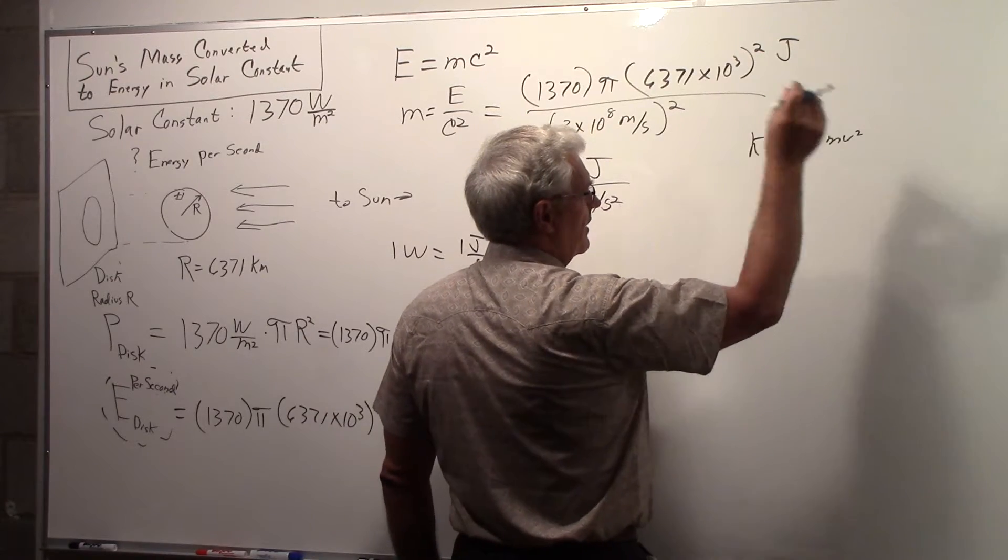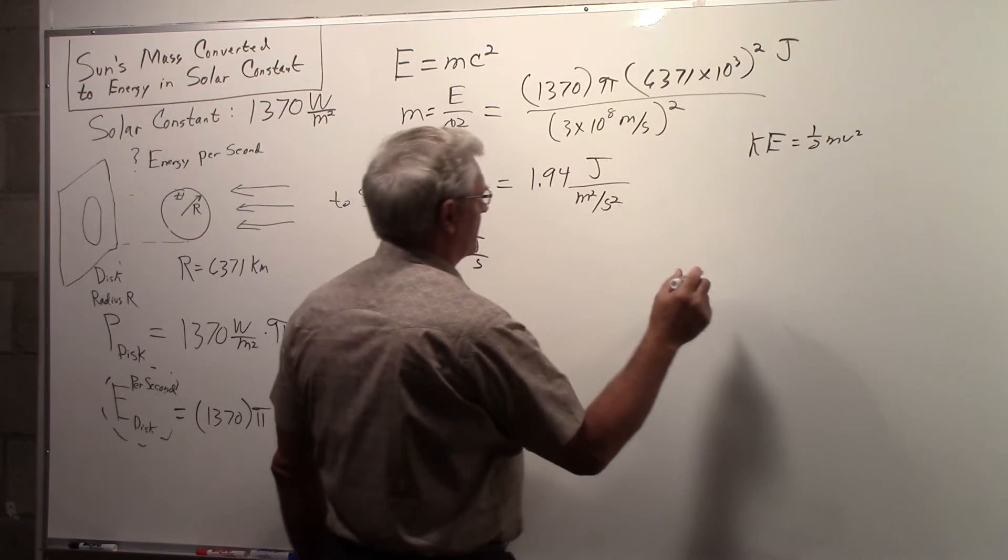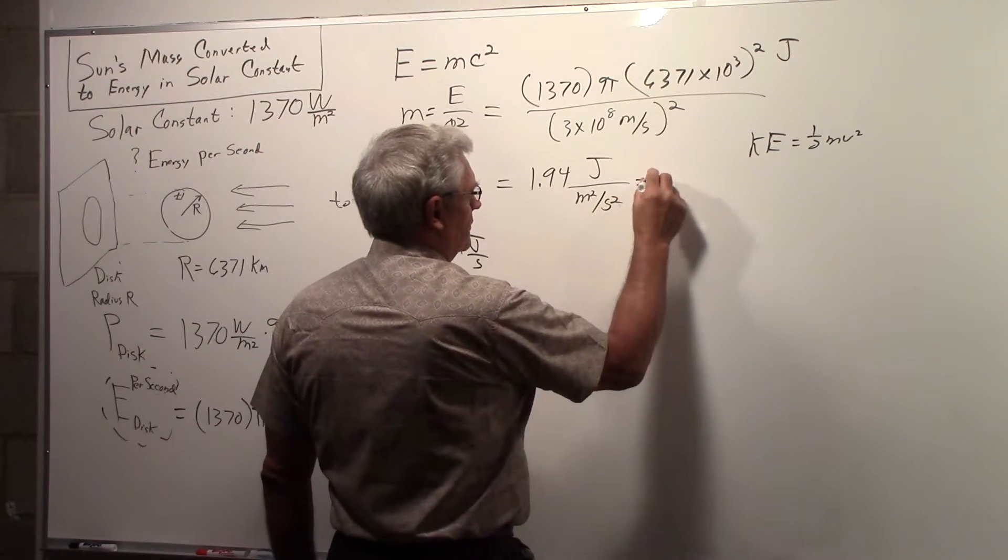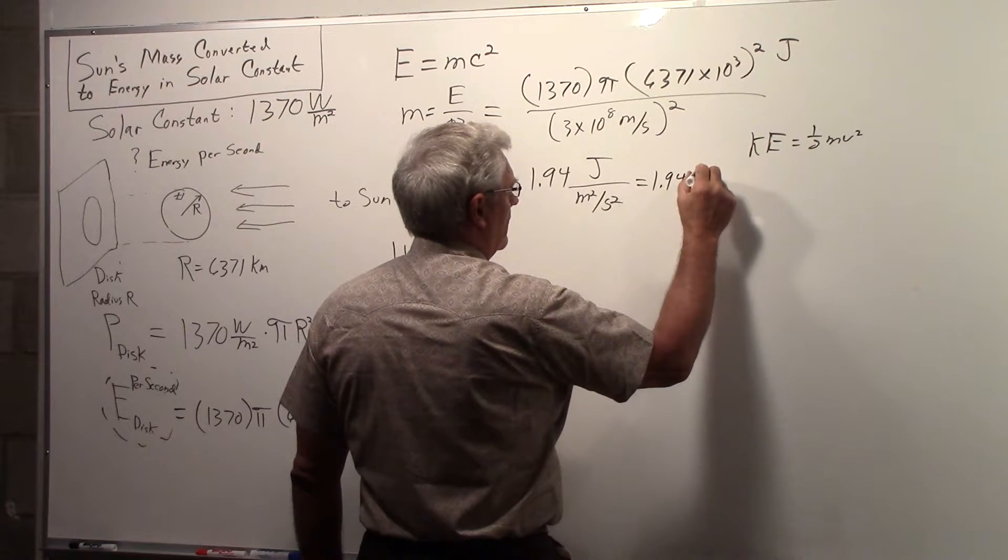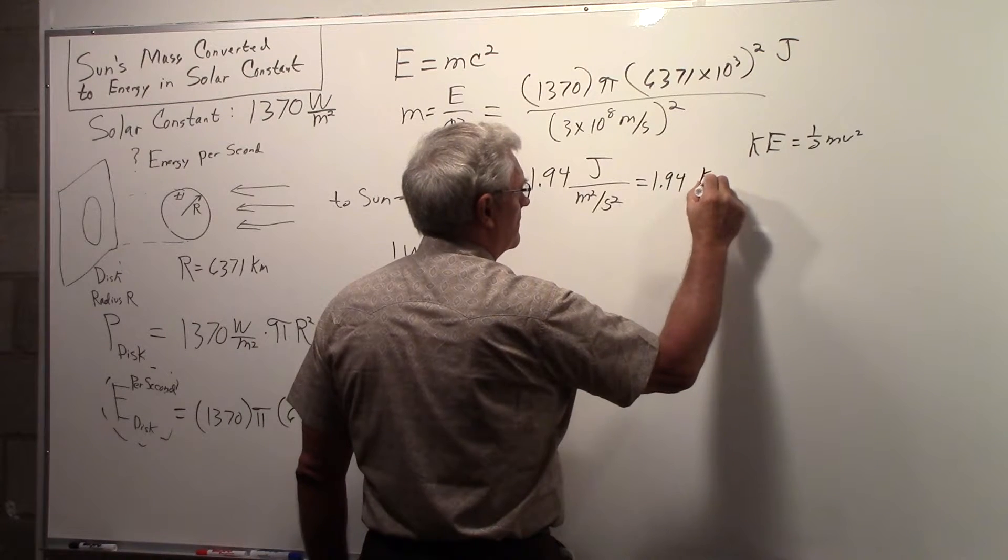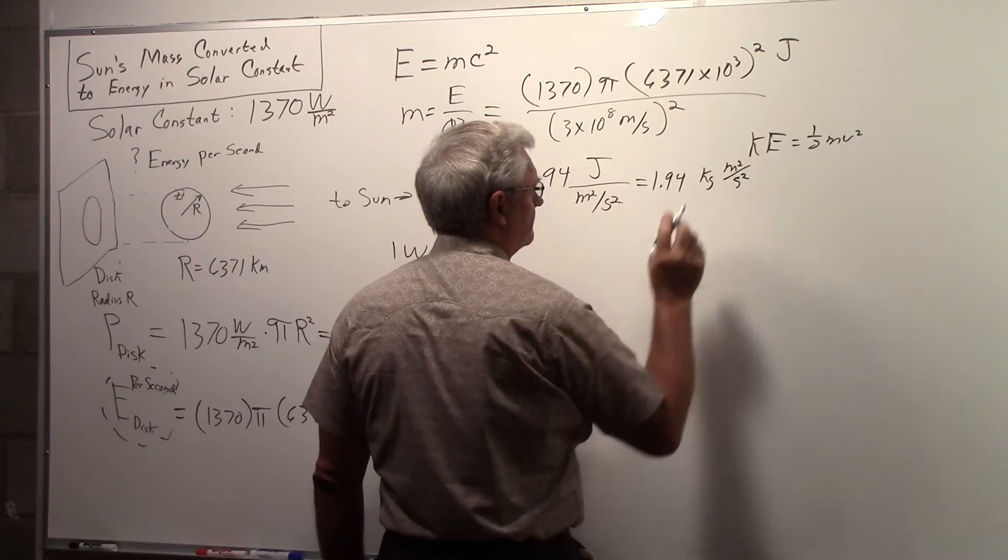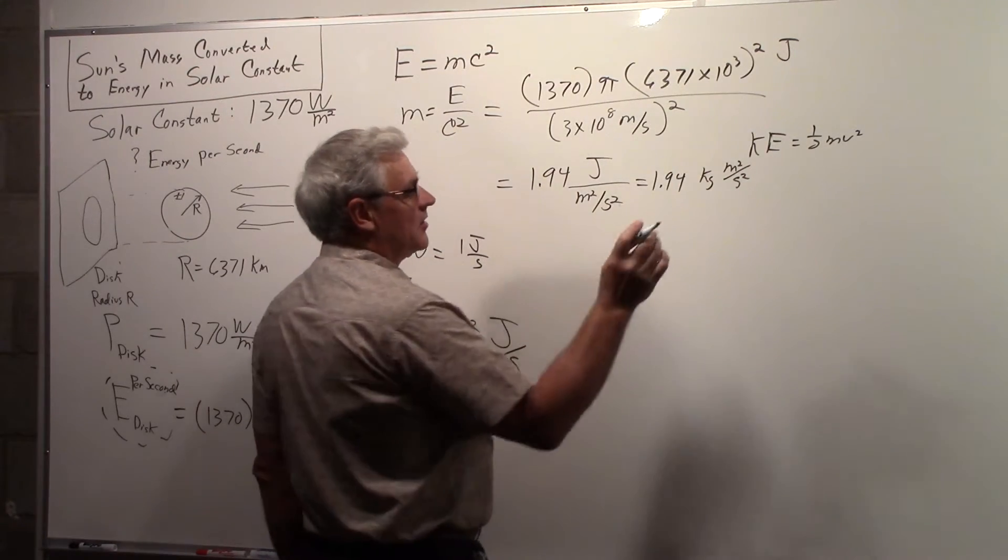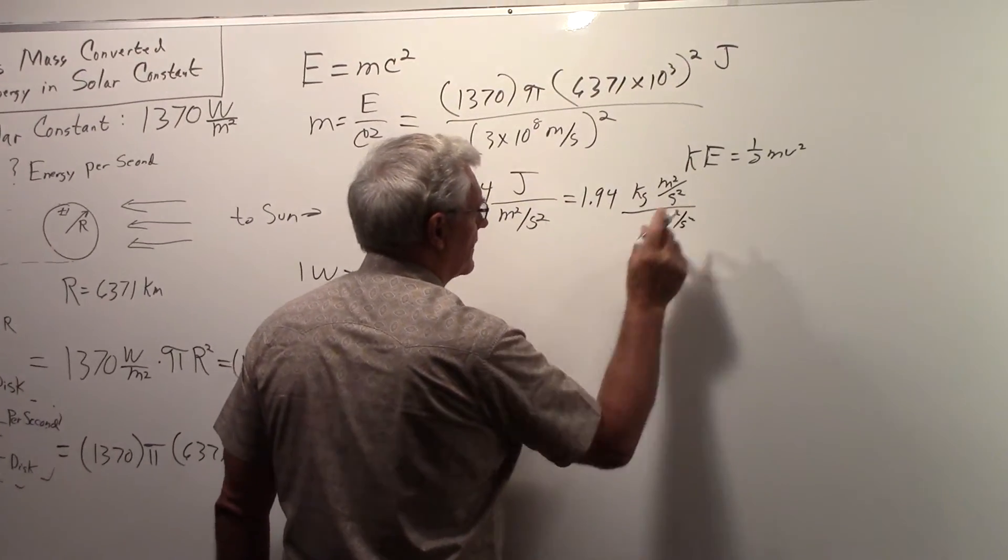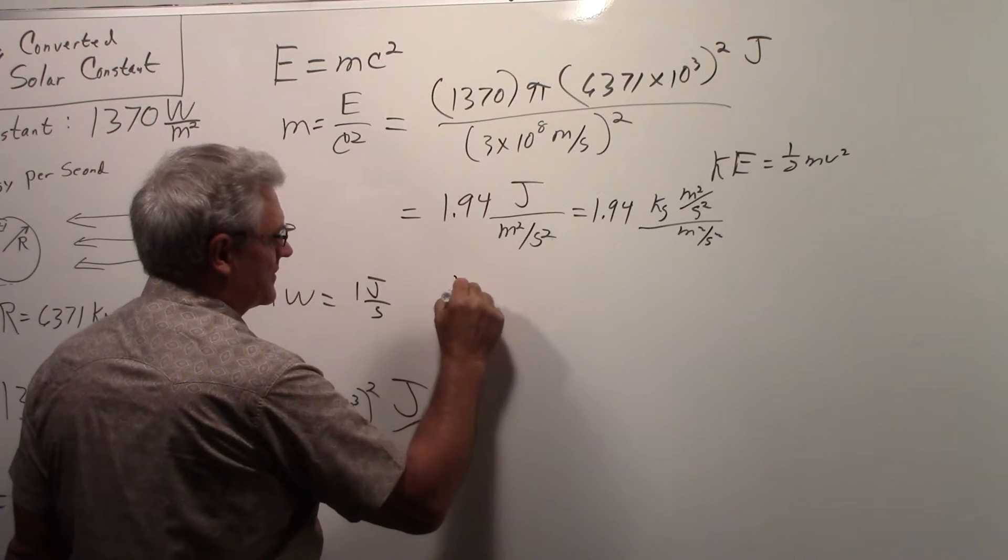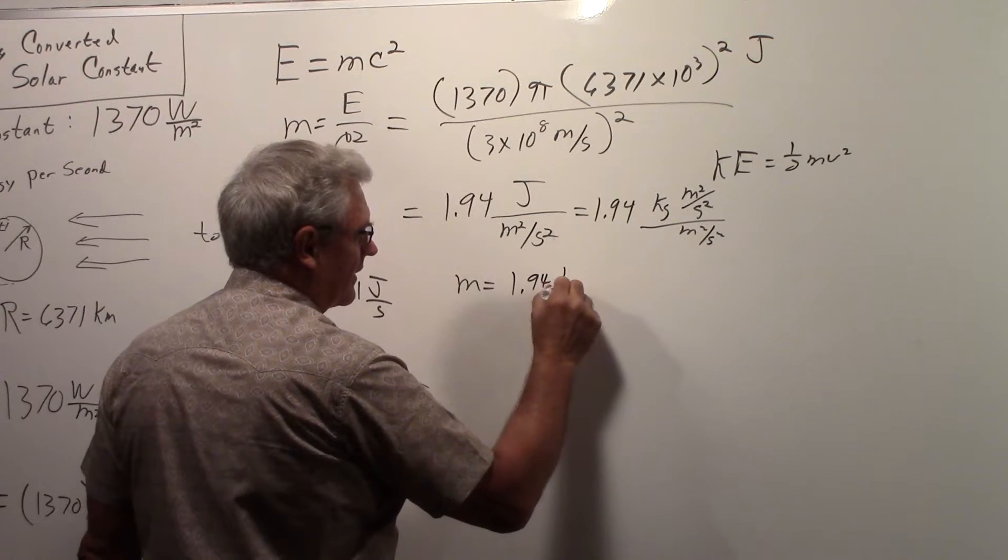So this is equal to 1.94 kilograms velocity squared meters squared per second squared. So all I did was I put this in for the units of joules, and that's per meter squared per second squared. And as you would expect, the mass turns out to be in kilograms, so we get 1.94 kilograms.